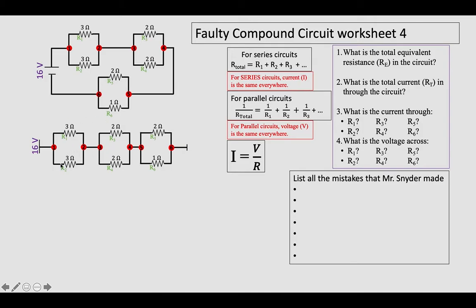And the bottom row is also in series, so that's a three ohm, two ohm, and one ohm, so that's a six ohm resistor. So I can redraw these as the top being a single seven ohm and the bottom being a single six ohm resistor.